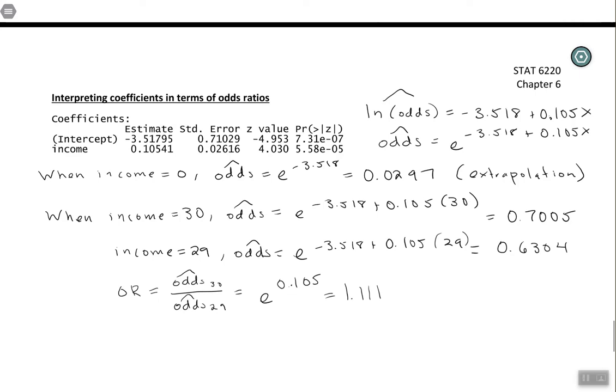Notice, this is our slope. This is a good way of thinking about what our slope is doing. So if you take e to the slope, that's giving you the odds ratio for a 1 unit change in x. And notice, if you were to take these predicted values themselves and divide them, you get the same number that way.